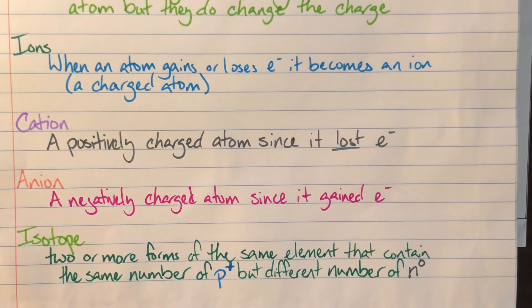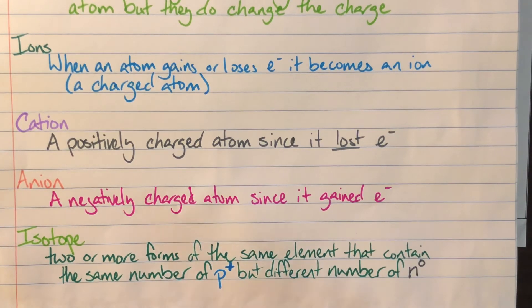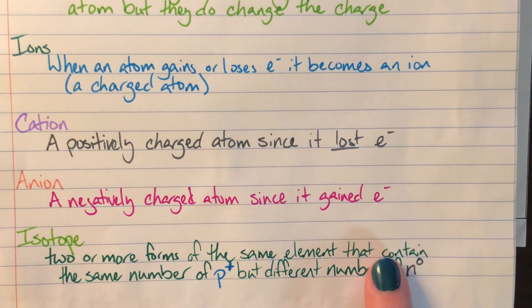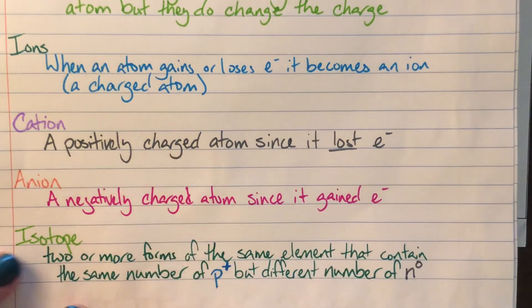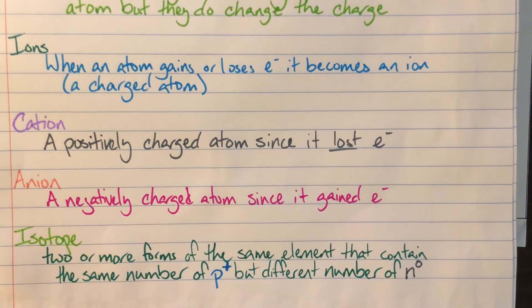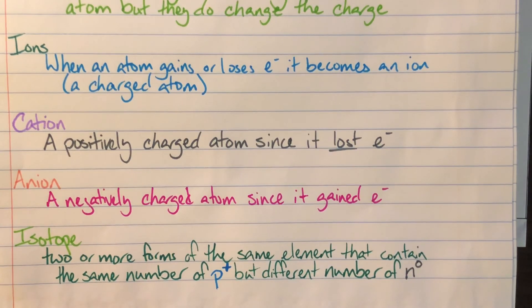So an isotope is going to be two or more forms of the same element. That means I'm going to have the same number of protons, but I'm going to have a different number of neutrons. This results in a differing mass of the actual atom. And since they are fundamentally still the same atom, carbon-12 and carbon-13 are both still carbon, but they weigh different amounts. So I have to identify them as something called an isotope to tell you, hey, these things weigh different amounts, but fundamentally they are the same thing.